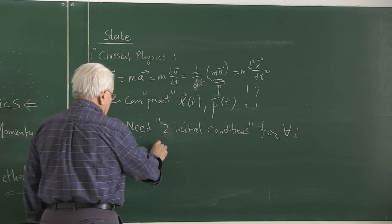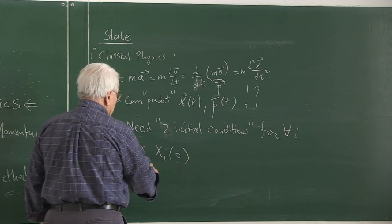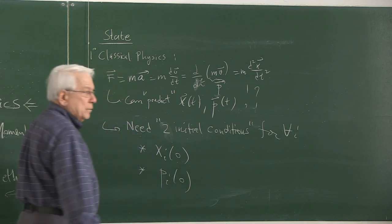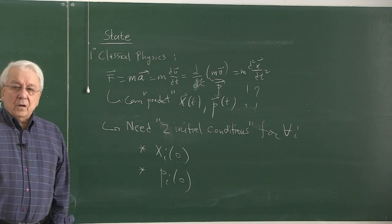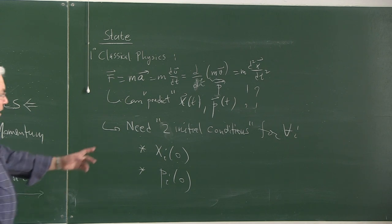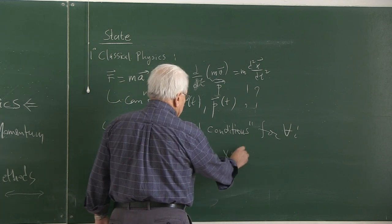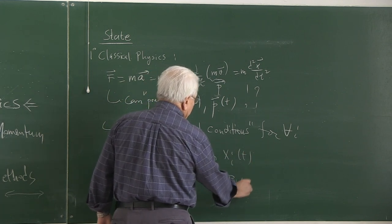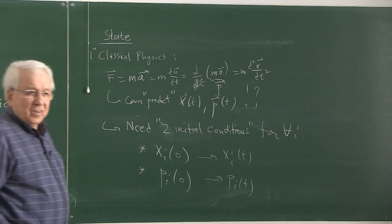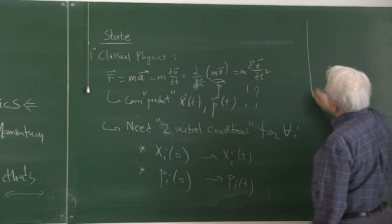What are those initial conditions? They are x_i(0) and p_i(0). If I know these initial conditions for each degree of freedom, I can predict their future values at any future time — uniquely and precisely. When I say uniquely and precisely, I am talking about two concepts. Causality is one, and there is another which I'll postpone for a few minutes.